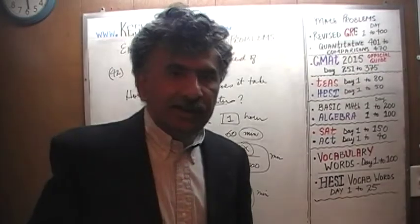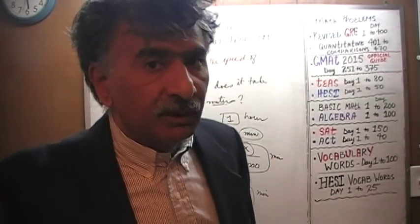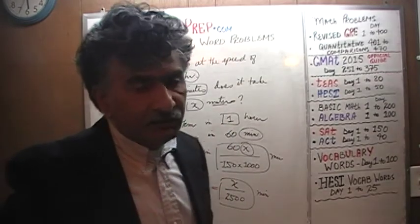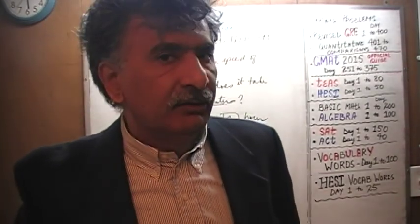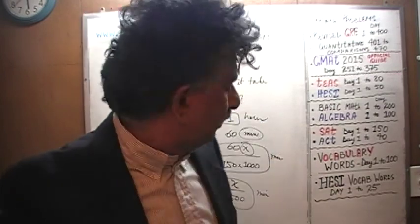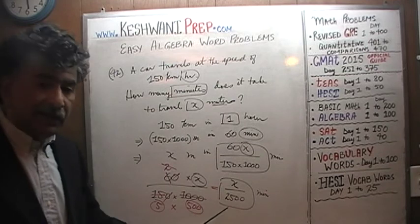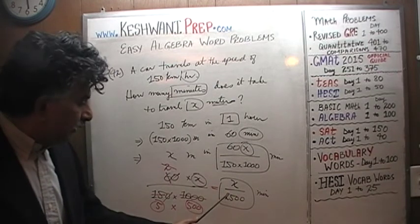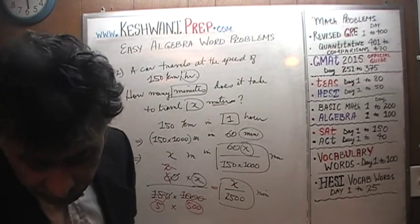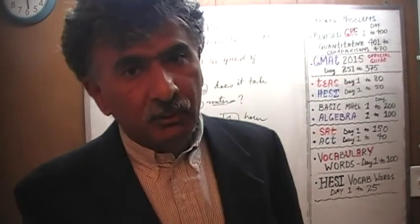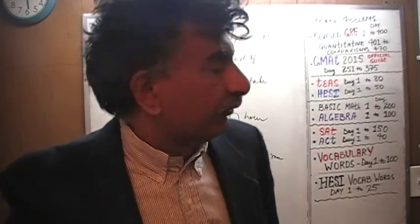The question was: how many minutes will it take to go X meters at the speed of 150 kilometers per hour? The answer is: it will take X over 2,500 minutes. But we're not done yet — we need to verify that answer. We're going to verify it, as we always do, by converting this algebraic problem into an arithmetic problem by plugging in numbers.